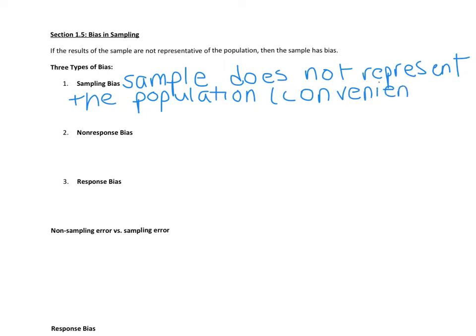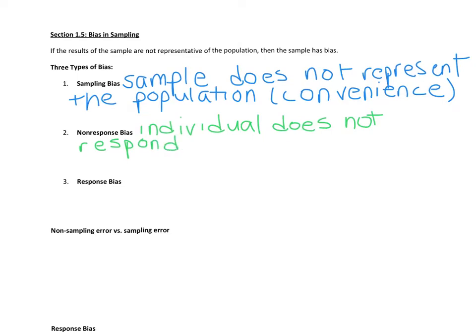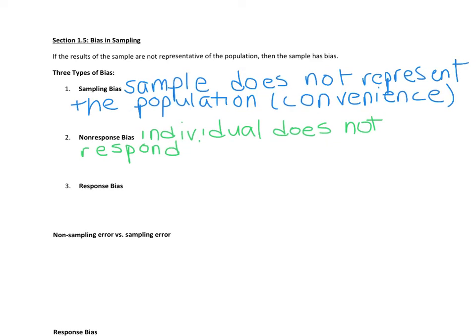The data we get from a biased sample isn't going to represent the population because the sample doesn't represent the population. The next type of bias is non-response bias, which happens when individuals in our sample don't participate or don't respond to our surveys. That missing individual is needed so our sample looks like the population. When we remove individuals due to non-response, our sample no longer looks like the population.